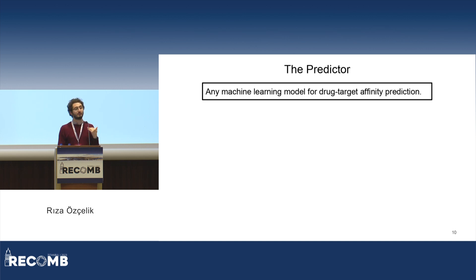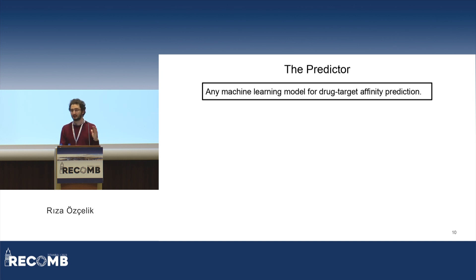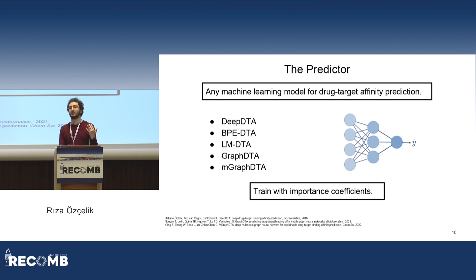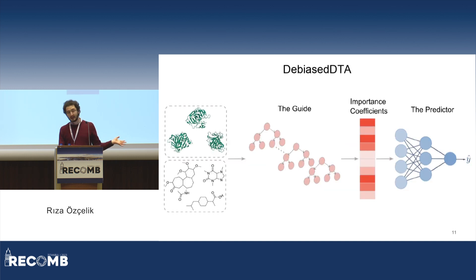With these importance coefficients from the guide model, we move on to training the predictor. The predictor can be any machine learning model for drug-target affinity prediction — any representation, any model architecture, existing or novel. We experiment with five different approaches, some using sequences and some using graphs. These predictors are trained using the importance coefficients learned by the guide model. To recap: we train the guide model, learn importance coefficients, and then use those coefficients to train the predictor.